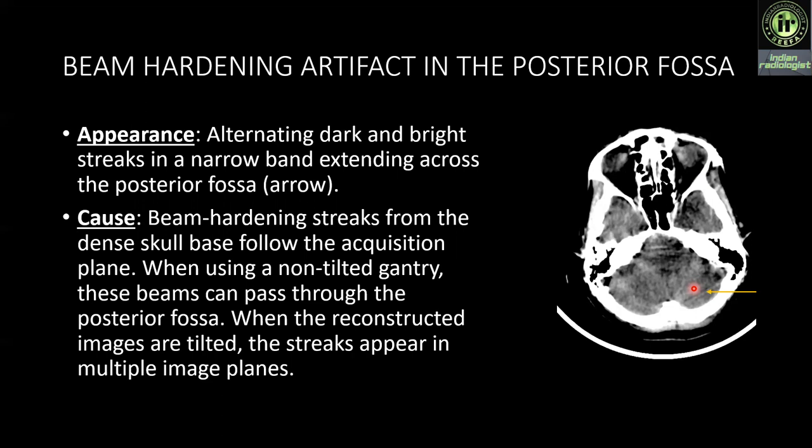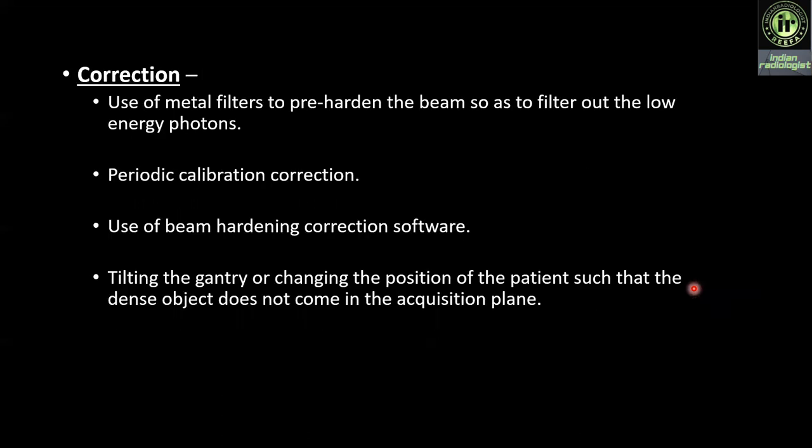When using a non-tilted gantry ring, these beams can pass through the posterior fossa. When the reconstructed images are tilted, the streaks appear in multiple modes. Correction: use metal filters to pre-harden the beam so as to filter out low energy photons, periodic calibration correction, use of beam hardening correction software, and tilting the gantry or changing the position of the patient such that the dense object does not come in the acquisition frame.